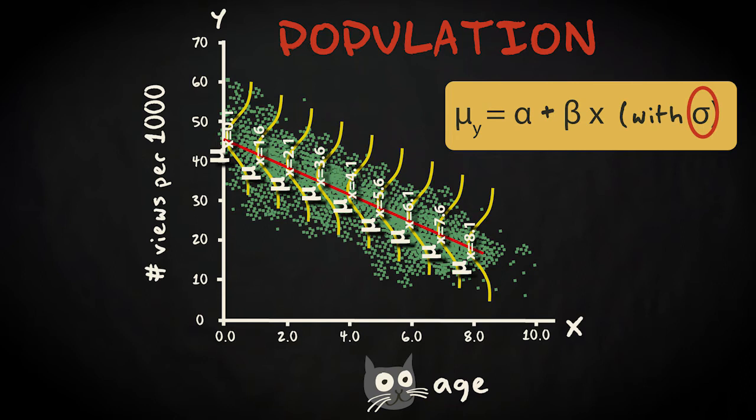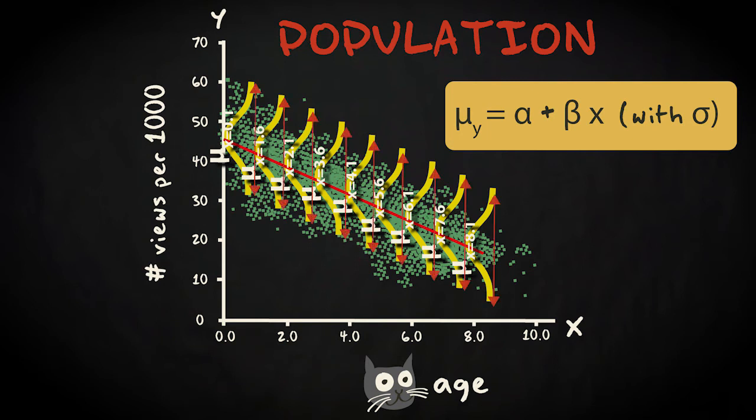The final difference is that we describe the population means, not predicted values, for individual cases. Modeling the means of the conditional distributions per cat age is important because it allows for natural variation around the regression line in the population.